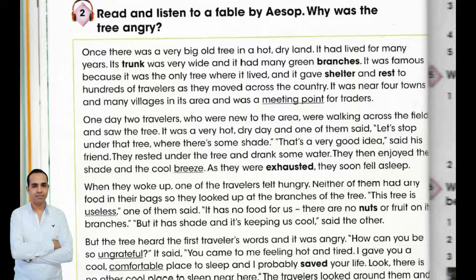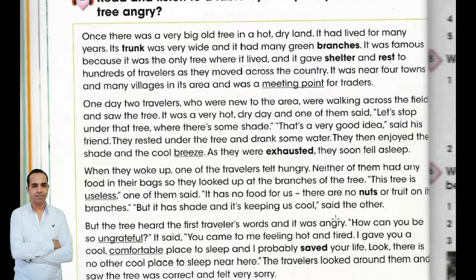'But it has shade, and it's keeping us cool,' said the other. But the tree heard the first traveler's words, and it was angry. 'How can you be so ungrateful,' it said. 'You came to me feeling hot and tired. I gave you a cool, comfortable place to sleep, and I probably saved your life. Look, there is no other cool place to sleep near here.' The travelers looked around them and saw the tree was correct and felt very sorry.